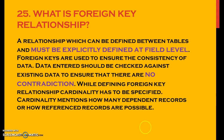What is a foreign key relationship? A relationship which can be defined between tables and must be explicitly defined at field level. Whenever we are connecting two tables we have to build a foreign key relationship. Data entered should be checked against existing data to ensure there are no contradictions. While defining a foreign key relationship, cardinality has to be specified — cardinality mentions how many dependent or referenced records are possible. The mandatory concept is to have the same data element between two tables; for example, table A and table B should have a field with a common domain.